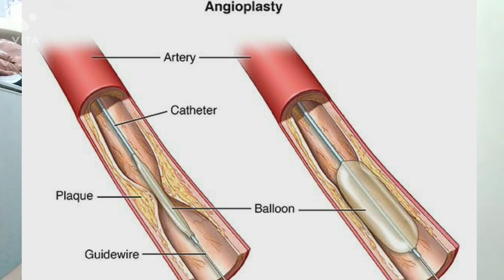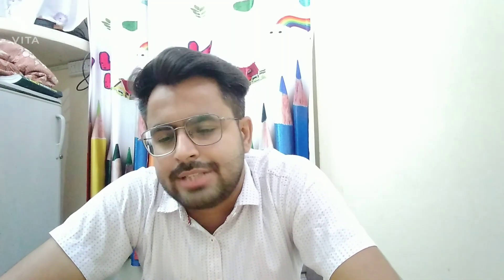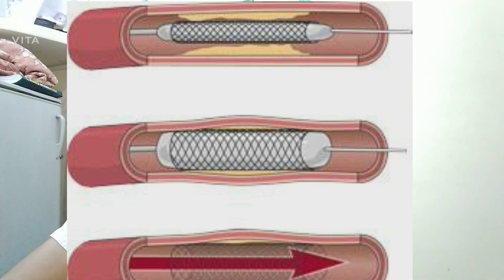The second procedure is the stent. In this technique, a metal tube is inserted into the coronary arteries to open the blockage. We can use the angioplasty technique in less severe cases — if the blockage is very minor, we can open it using angioplasty.